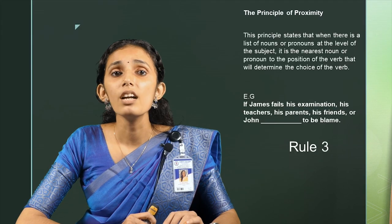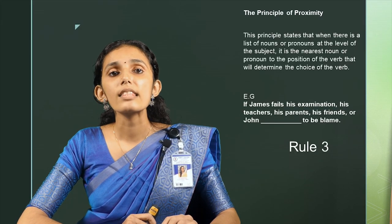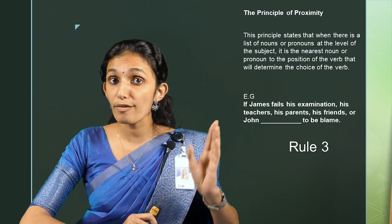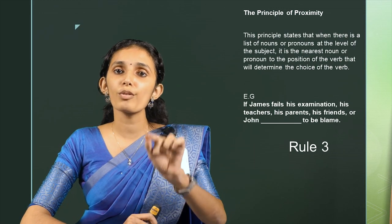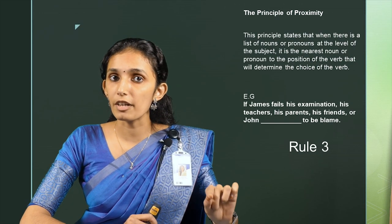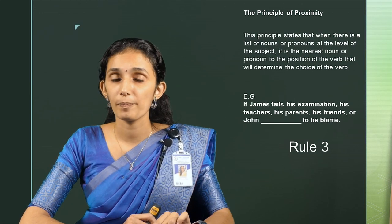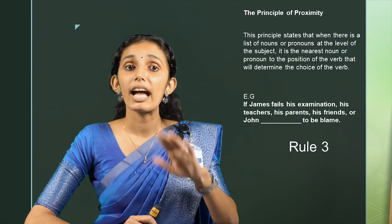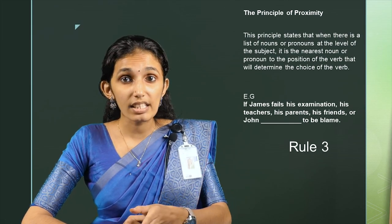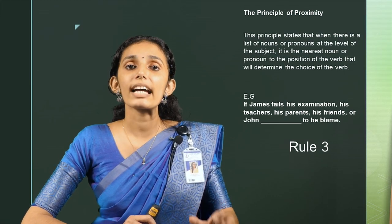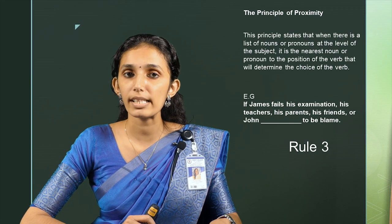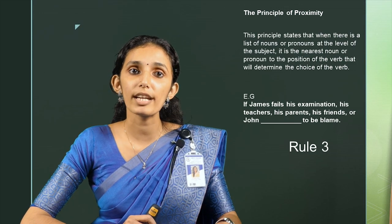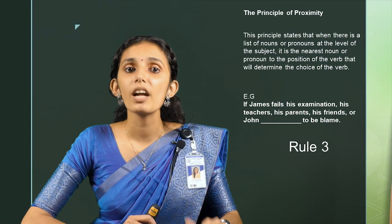Rule number 3: The principle of proximity. This principle states that when there is a list of nouns or pronouns at the level of the subject, it is the nearest noun or pronoun to the position of the verb that will determine the choice of the verb. For example, if James fails his examination, his teachers, his parents, his friends, or John ___ to be blamed.